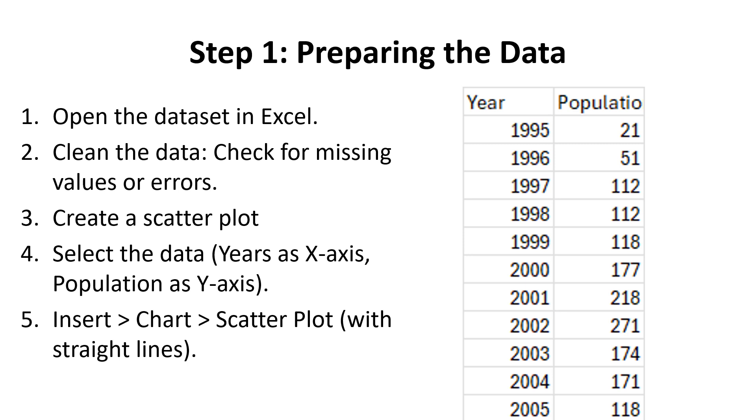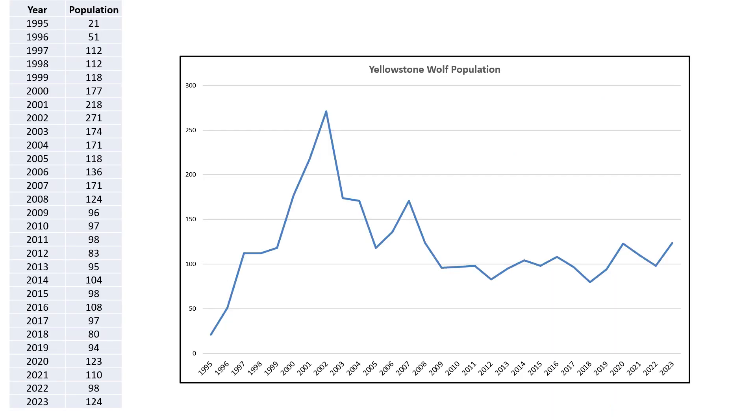Once you're happy with that, we're going to create a scatter plot. Select your data, highlight that within your cells, then insert chart and we want scatter plot with straight lines.